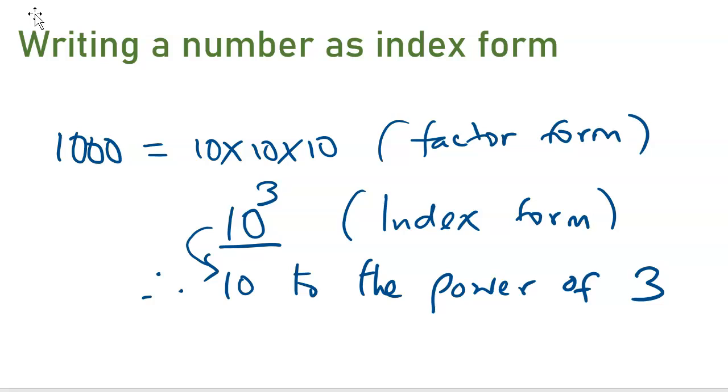Let me show you another example. Say we have 8, 8 can be written as 2 times 2 times 2. So this is the factor form. But if I want to write it as index form, it will be 2 to the power of 3. This is what we are calling index form.